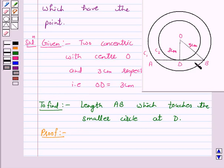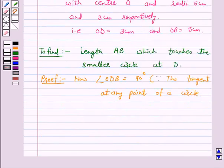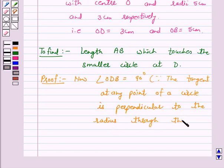And D is a point of contact, therefore angle ODB is equal to 90 degrees because the tangent at any point of a circle is perpendicular to the radius at the point of contact.